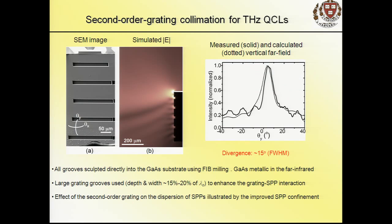The divergence is very large—close to 180 degrees vertically if you don't put something on the facet. At terahertz frequencies, semiconductors like gallium arsenide are metallic, so we don't have to put metal on top—we just sculpt the facet. The first attempt with a second-order grating shows collimation effect, but there's a lot of energy wasted in the tails. At even longer wavelengths, the wave extends a lot in space and doesn't feel the grooves much, so scattering efficiency is not very large.